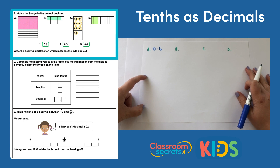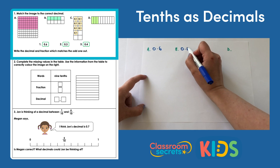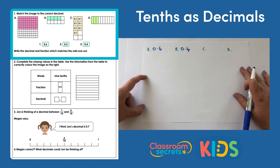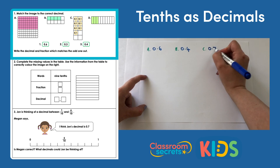B: this time we have a shape that's been split into ten equal pieces and we have four shaded, so that means it represents four tenths, which is 0.4. C looks like some kind of tens frame. There are ten parts and we have seven counters that say 0.1, so that's seven tenths — 0.7.